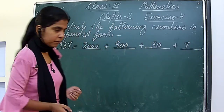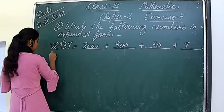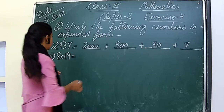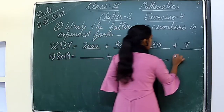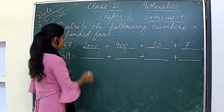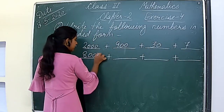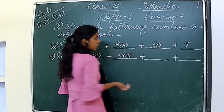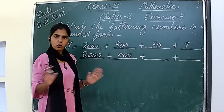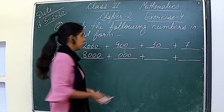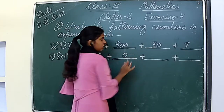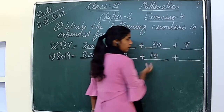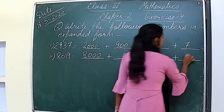The second part is 8019. Let's start writing its expanded form. Place value of 8 is 8000. Place value of 0 will be 0 — we can write one zero; there is no difference because 0 is 0. Place value of 1 will be 10. And place value of 9 is 9.